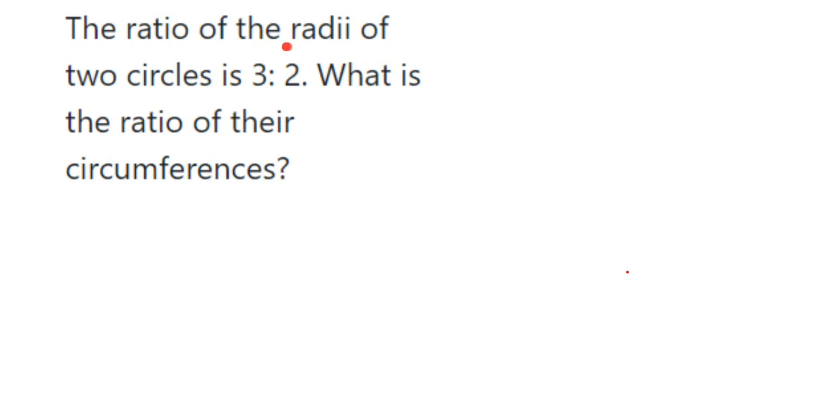So what they have given - they have given the ratio of radii. Radii means when there are more than two radius we're gonna call it as radii. So ratio of the radii of two circles is 3 is to 2 and we have to find out the ratio of the circumference. It's very simple, we're going to use the circumference formula to find out the answer.